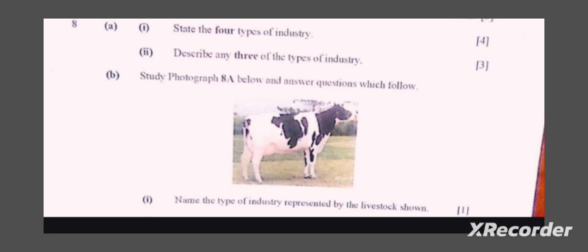Our next question says, describe any three of the types of industry. On this one, you were supposed to choose three types of industry and explain them. I want to start on explaining what is the primary industry. Primary industry is the first stage of production that involves the extraction of raw materials from the earth's surface or from the ground. That is primary industry.